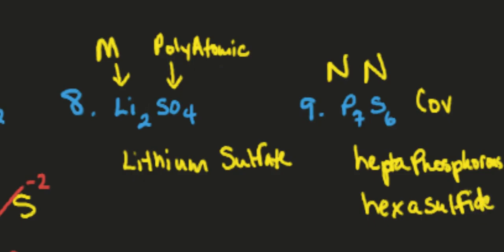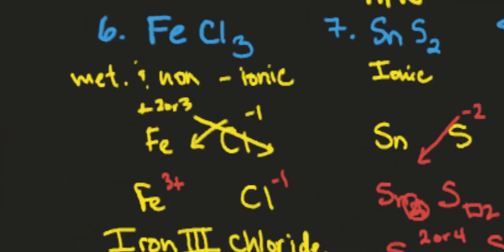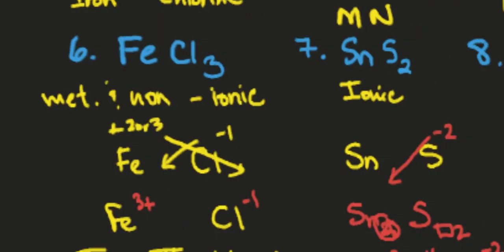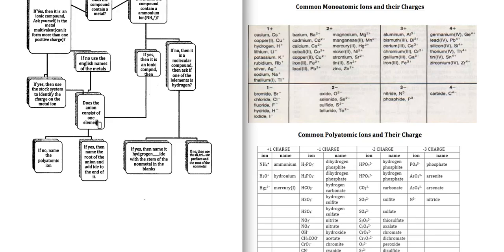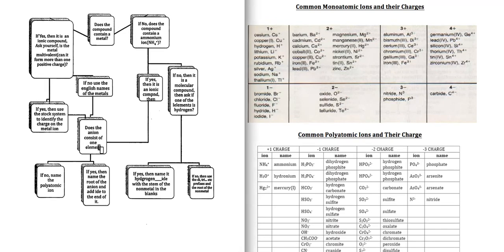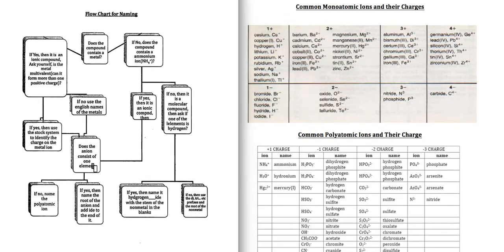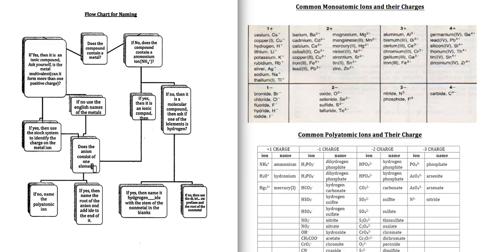So you should be able to get pretty familiar with these. Definitely memorize your polyatomic ions. Work with this flow chart as much as you can. It will be helpful. I guarantee you if you do those things, you should have no problems. Make some note cards or flashcards for these ions.